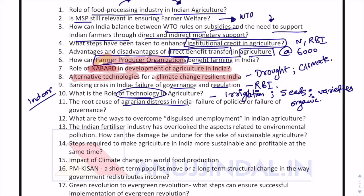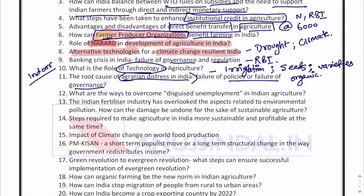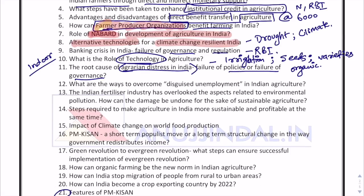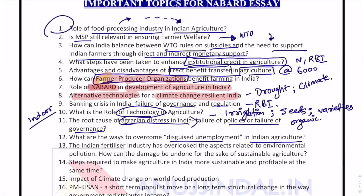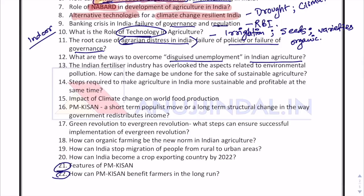The root cause of agrarian distress in India — failure of policies or failure of governance — is also important because agrarian distress is still not resolved in India and is very much a part of Indian agriculture. What are the ways to overcome disguised unemployment in Indian agriculture? This was also discussed in the first topic on food processing — how it resolves the problem of disguised unemployment — and there are many other ways of overcoming disguised unemployment in Indian agriculture.